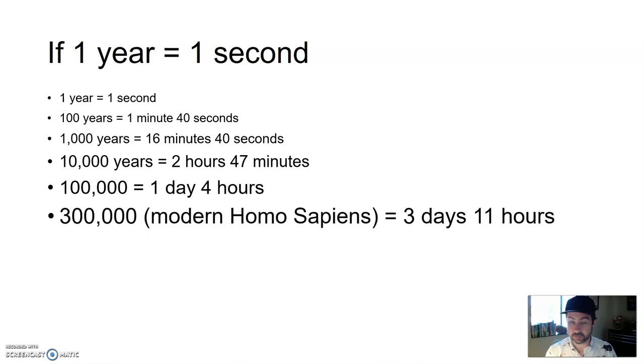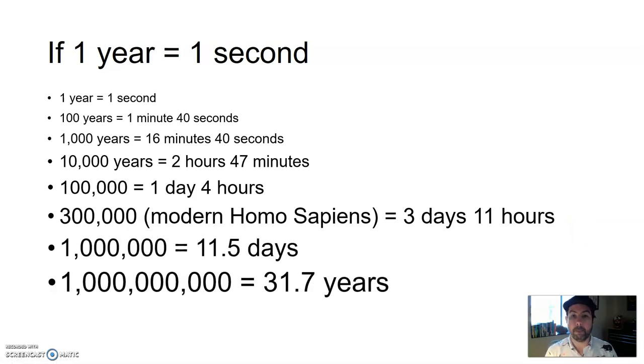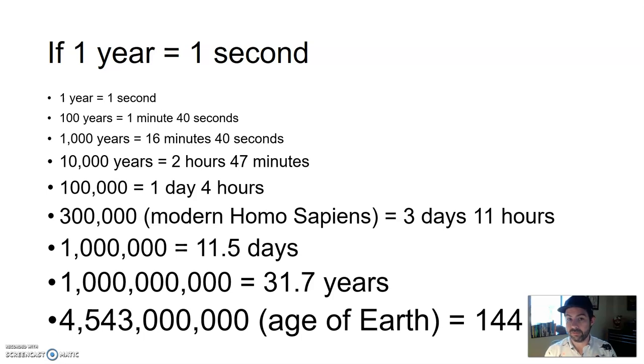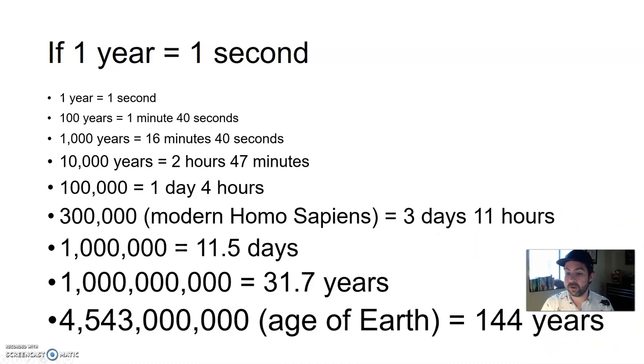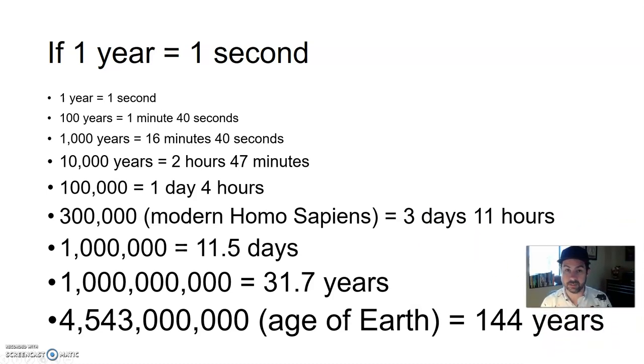Three hundred thousand years, that's how long ago modern Homo sapiens, the species that you and I are, evolved. Three hundred thousand years would be three days and eleven hours. A million years would be eleven point five days. A billion years would be thirty-one point seven years. Four billion four hundred and forty-three million years, that's the age of the earth, would be one hundred and forty-four years, if one year is one second.